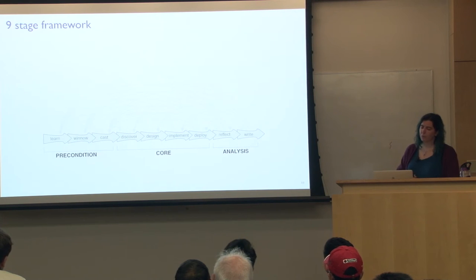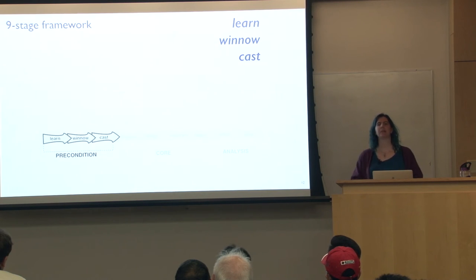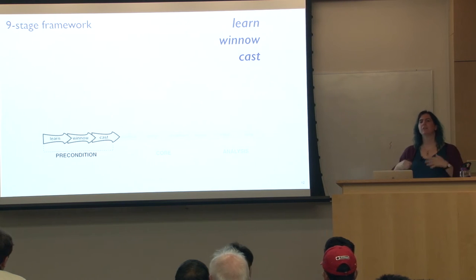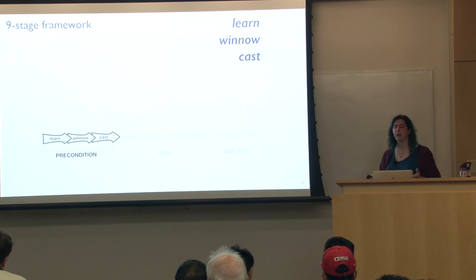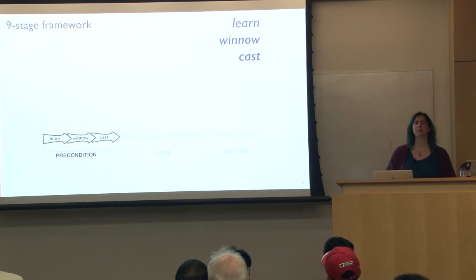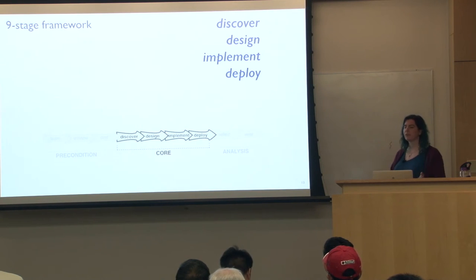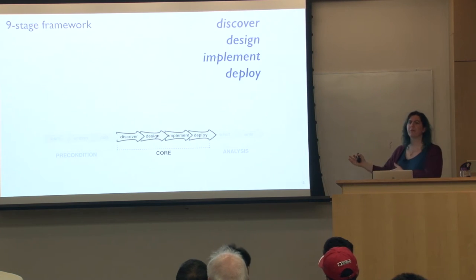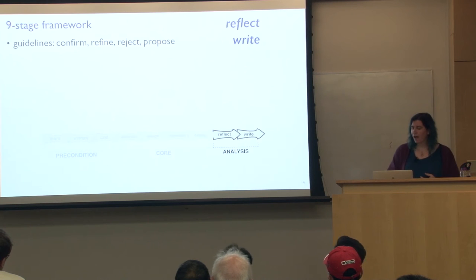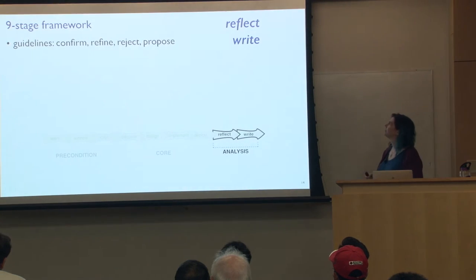The nine-stage framework has a precondition phase: learn enough about visualization to know the vocabulary of the design space. That's what my book was an attempt to do — systematically help people learn that design space relatively quickly. Then winnow the set of people you will work with — not everybody who wants a visualization should get one. The main phase involves discovery, design and implementation, and deployment. Finally, the analysis phase involves reflection on what you learned to turn a practitioner-based project into research.